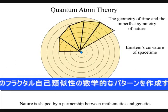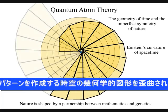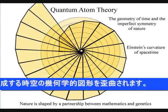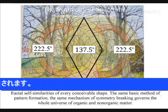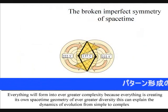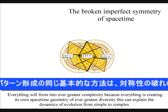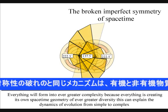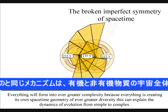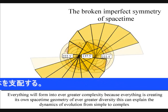The same basic method of pattern formation, the same mechanism of symmetry breaking, governs the whole universe of organic and non-organic matter. This gives us a geometrical and therefore mathematical base for the evolution of life, explaining why nature never produces straight lines, but an endless array of curves and spirals.